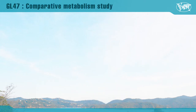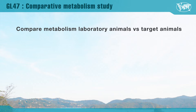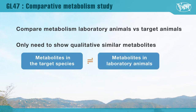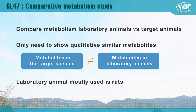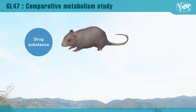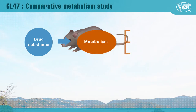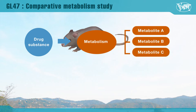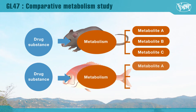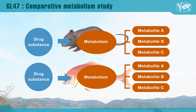The GL47 guideline is to compare metabolism between laboratory animals and target animals. The comparative metabolism study needs only show qualitatively similar metabolites. Parent compounds and metabolites produced in the target species should also be found in the toxicological species. The toxicological species used for this study is rats in most cases, but could use others. After the administration of a drug to a rat, the drug substance will be metabolized and metabolites A, B, and C are produced. Thus, during the toxicological study, the rat must be exposed both to the drug substance and to its metabolites A, B, and C. After the administration of a drug to a food animal, if the generated metabolites are the same or similar to the metabolites found in a rat, it could be said that the residue in the food animal contains the same or similar metabolites.